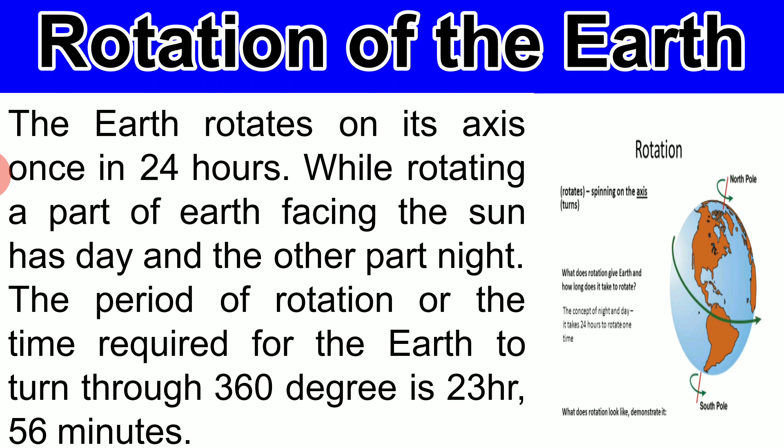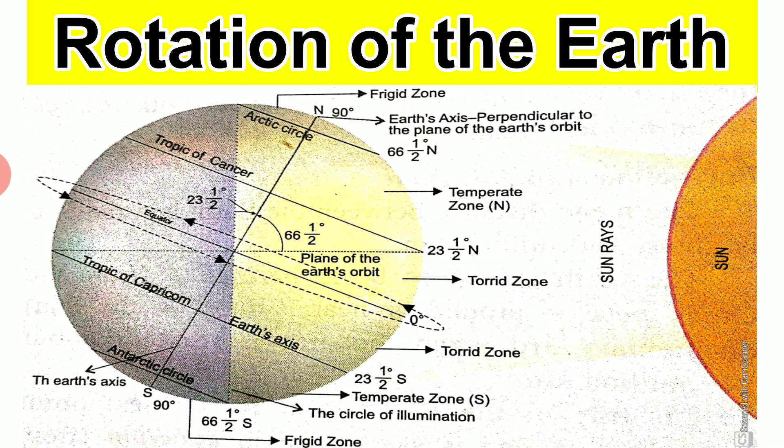Look at the picture to understand about the rotation of the earth. While rotating, the part of earth facing the sun experiences day and the other part experiences night. The two end points through which the axis passes are known as the north pole and the south pole. The axis is tilted at an angle of 23 and a half degrees from the vertical, making an angle of 66 and a half degrees with the plane of ecliptic.